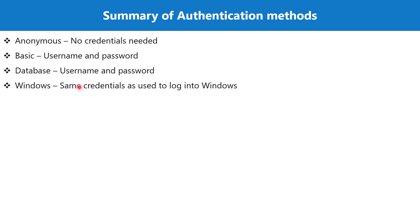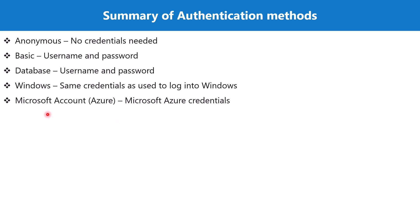The next one is called the Windows authentication method. Wherever you find the Windows authentication method, you are going to pass the same credentials you use to log into the Windows environment on your desktop machine. Next is the Microsoft account — if you are connecting to a source on the Microsoft Azure cloud, you are going to use the credentials for the Microsoft Azure account to connect to any resources hosted there.